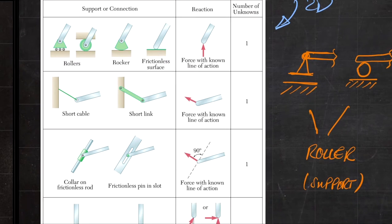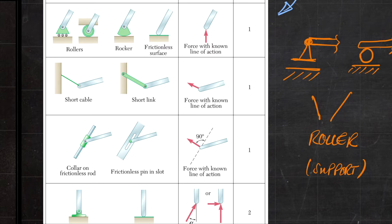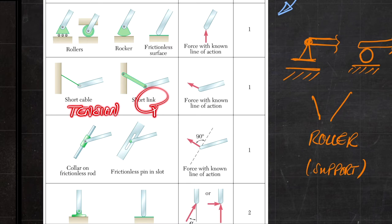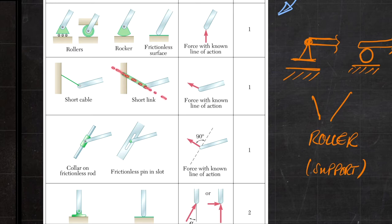You also have supports such as cables and links. Cables and links apply a force only along the member itself. If it is a cable it can only apply tension along its line; if it is a link it could be tension or compression. A link is similar to a cable in that the force is along the member, but it can be compression or tension, whereas cables or ropes are always in tension.